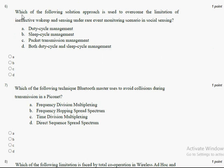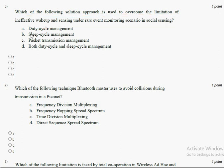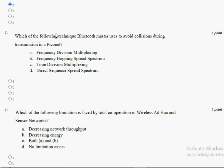The sixth question: which of the following solution approaches is used to overcome the limitation of ineffective wake-up and sensing under a rare event monitoring scenario in social sensing? The answer for the sixth question is option A, duty cycle management. Mark option A for the sixth question.